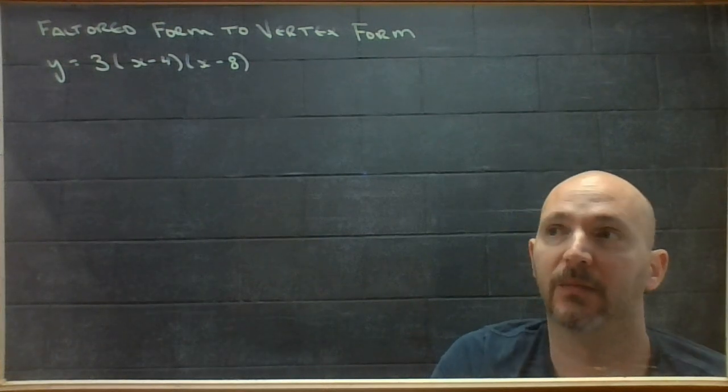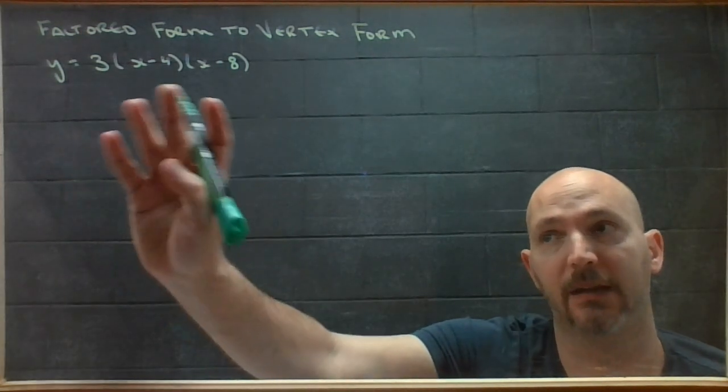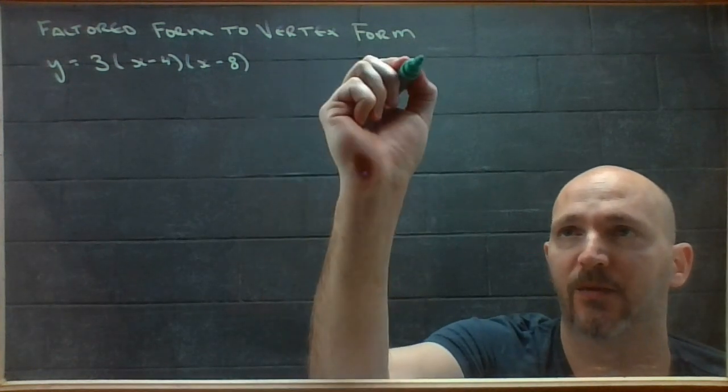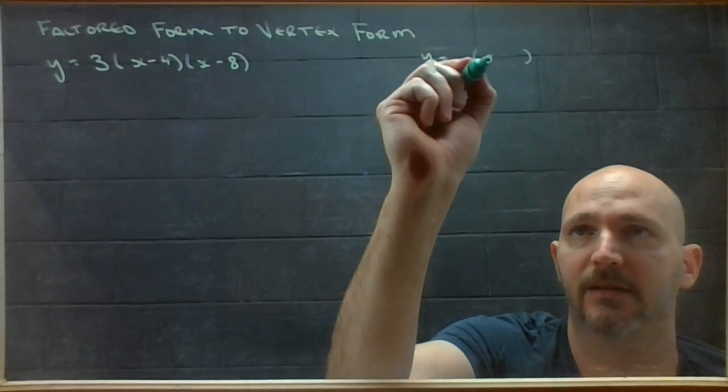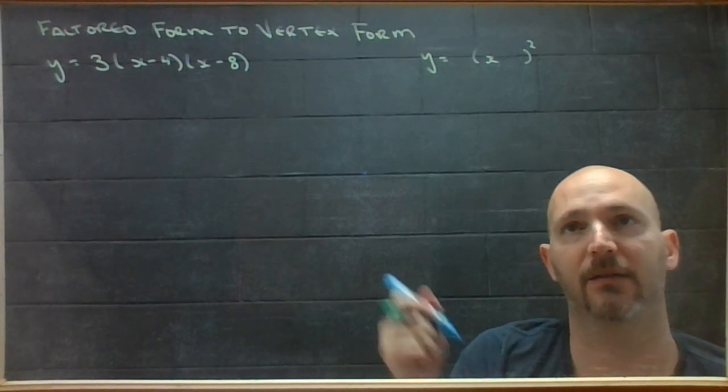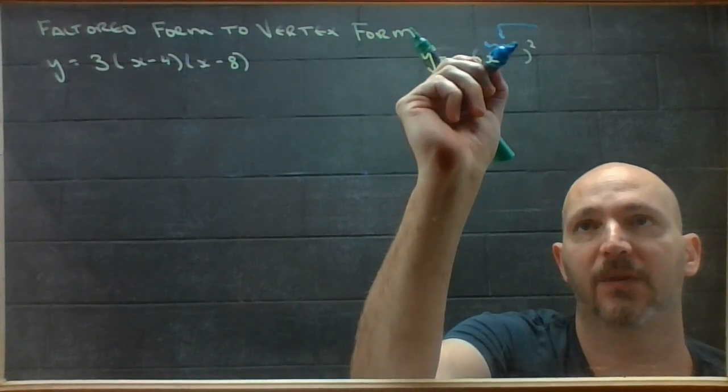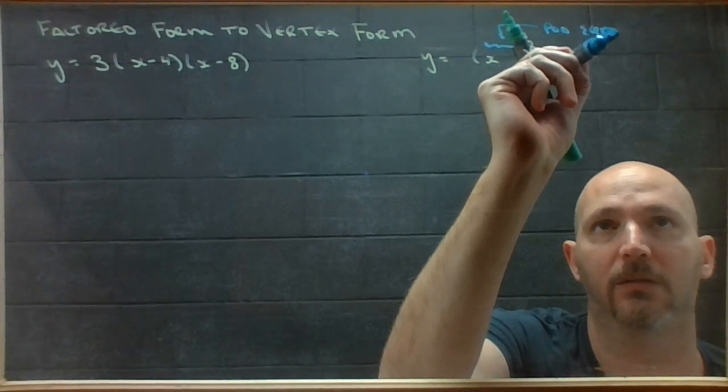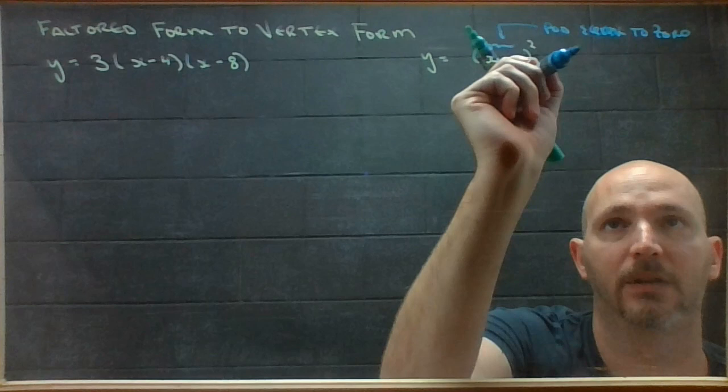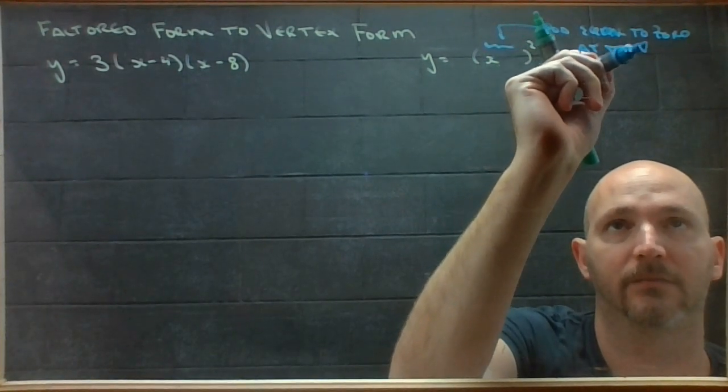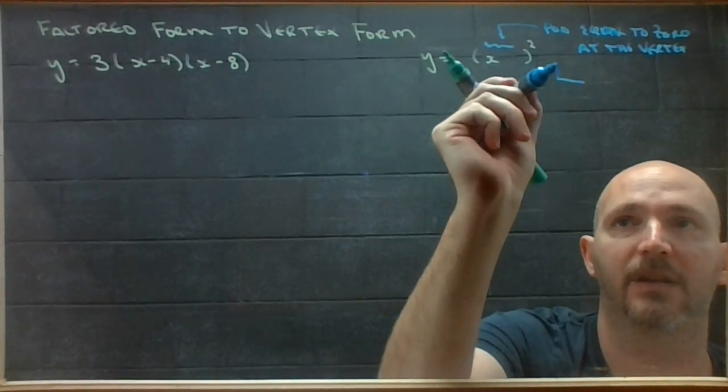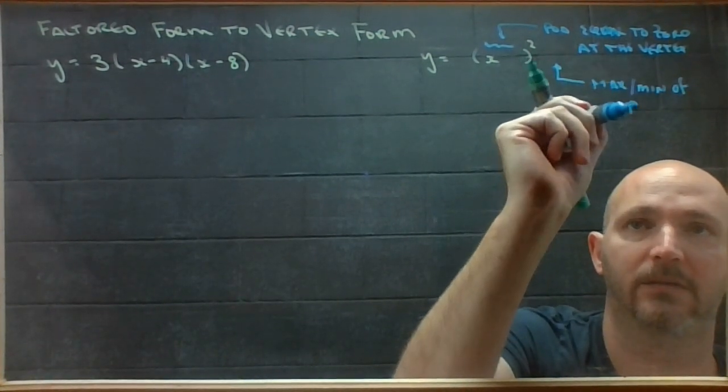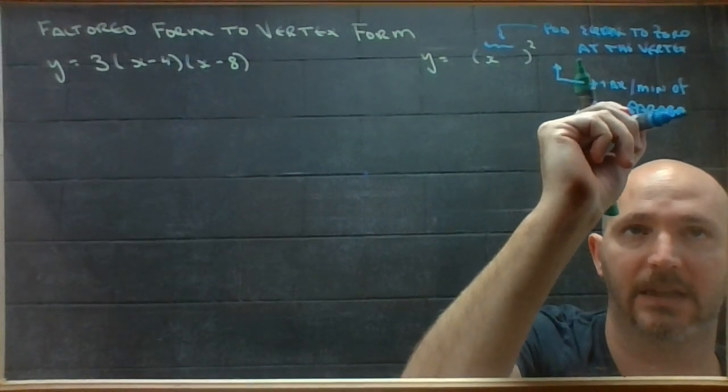To do factored form to vertex form, you have to take the information you know in this form and use it to find the vertex in order to write that formula. So a vertex form looks like this, and the number that goes here is you end up with a pod equal to zero at the vertex. And then you end up with a number here that is either the maximum or the minimum value of the parabola, which happens to be the y-coordinate of the vertex.